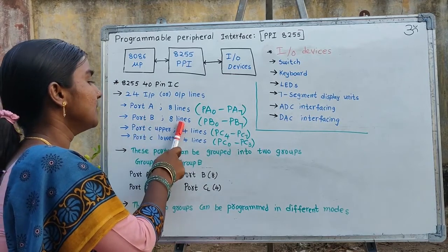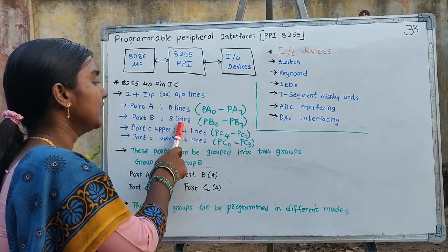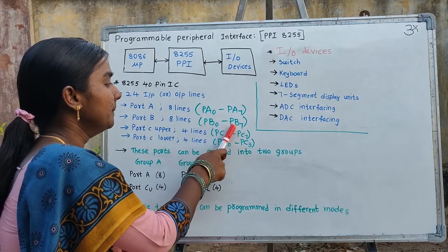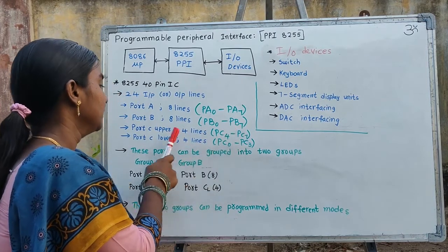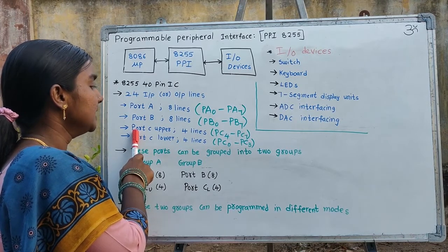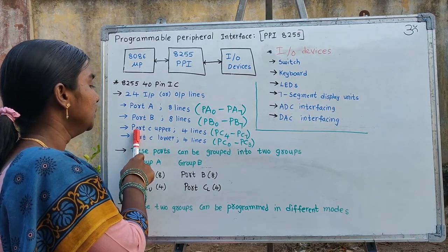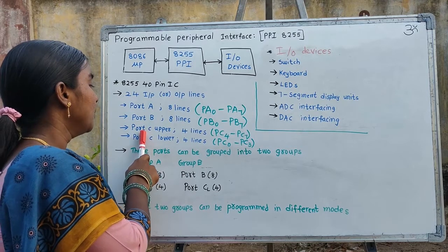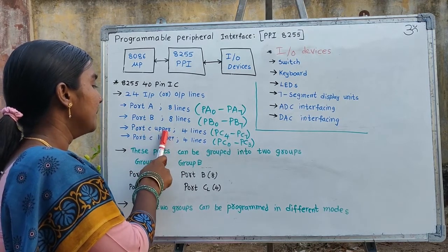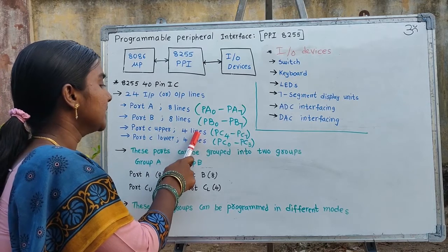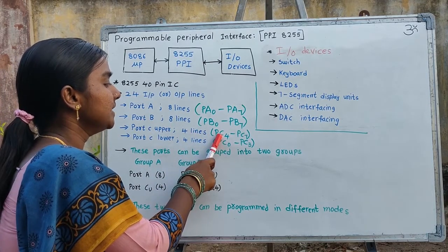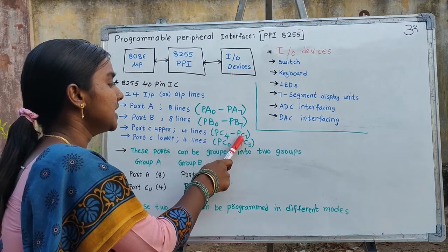Port B consists of 8 lines, denoted as PB0 to PB7. Port C also consists of 8 lines, and they are divided into 2 subgroups: Port C lower and Port C upper. Port C upper consists of 4 lines denoted as PC4 to PC7, and Port C lower consists of 4 lines denoted as PC0 to PC3.